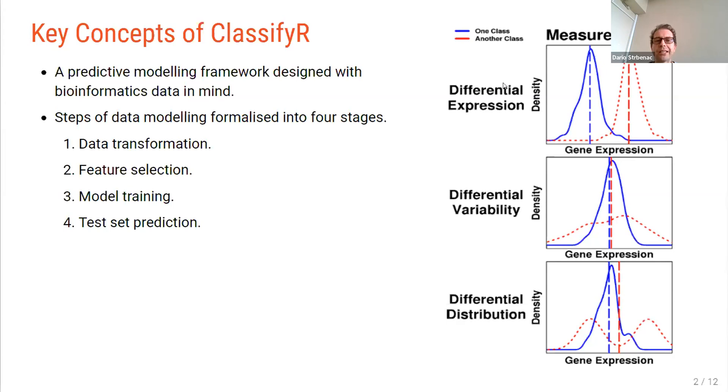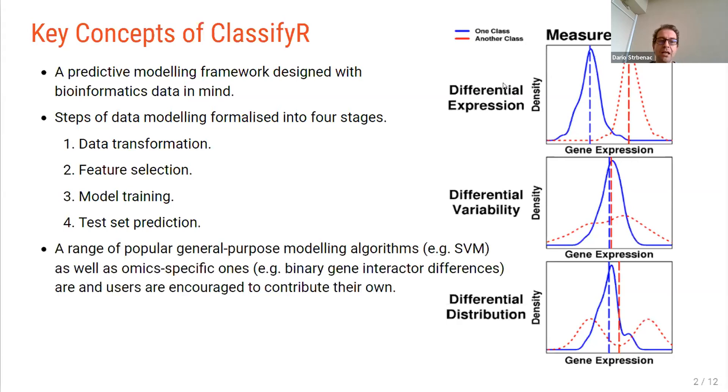So it's a predictive modeling framework designed with bioinformatics data in mind. So it formalizes modeling into four stages. The first stage is data transformation. Unless this uses information about the class of the sample, this is typically done outside of the framework. But there are some data transformations which also depend on the classes and can be done inside of the cross validation. The second stage is feature selection. And the third stage is model training. And the fourth stage is test set prediction.